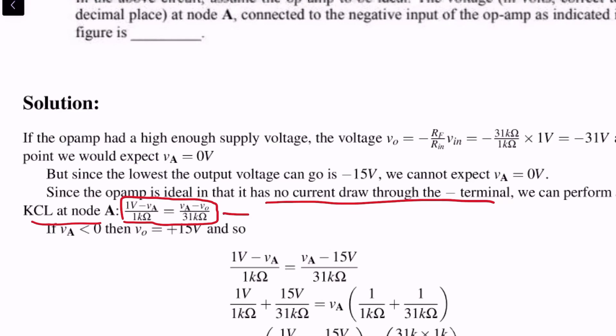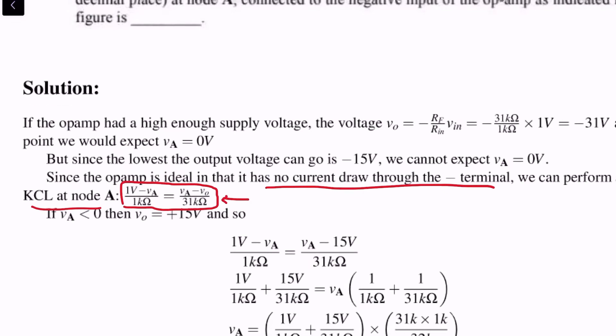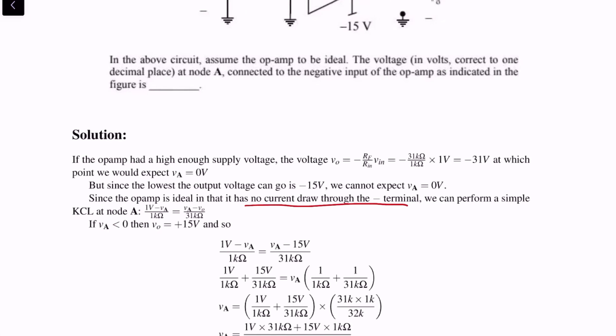Now at this point, given that Va is not equal to 0, we go through the other two possibilities: that Va is less than 0 and Va is greater than 0. So let us start with Va is less than 0.